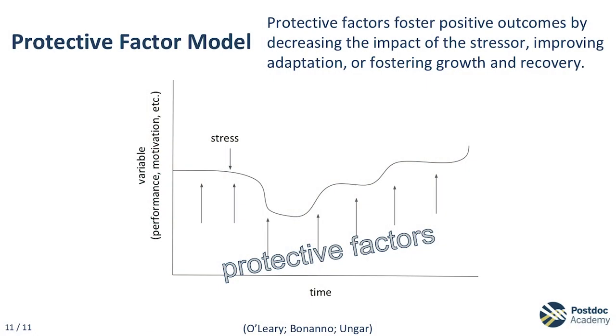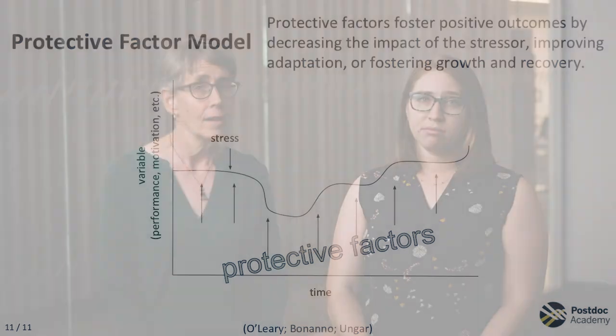Finally, the protective factor model, described by O'Leary, Bonanno, and Unger, considers resilience as factors that support the entire process. In our example of the twice-rejected manuscript, what might be some protective factors that support the process of adaptation and recovery? Say the postdoc has joined a writer's group — they would have a whole community of support. They would have seen others in the process of revision whose manuscripts were eventually accepted. Being part of this group could help the postdoc develop writing skills, might boost their confidence, normalize manuscript rejection, and better understand the process of getting something published. These factors all contribute to decreasing the stress brought on by rejection.